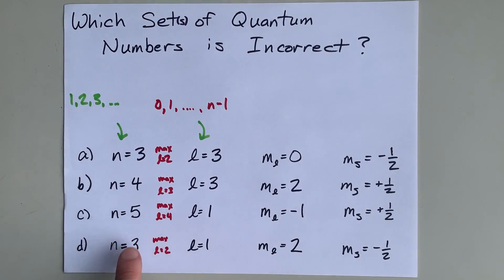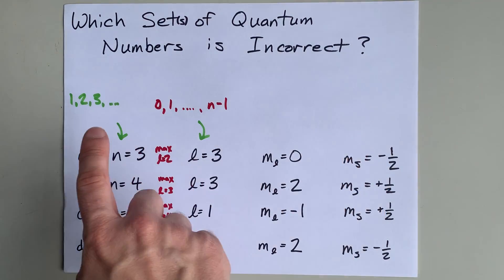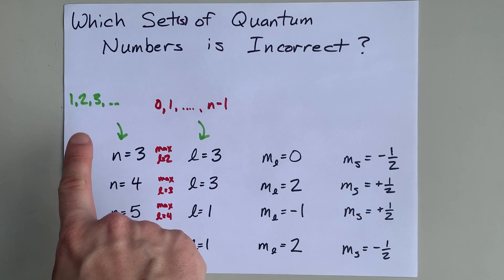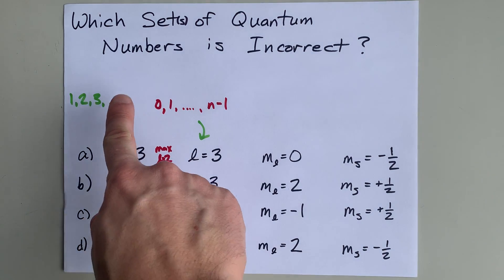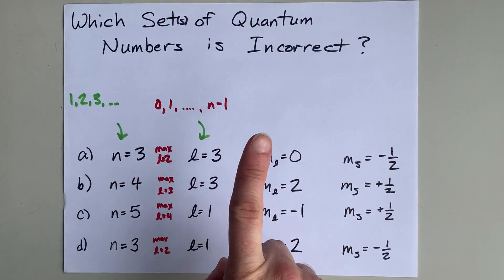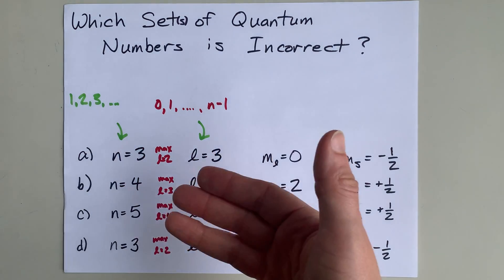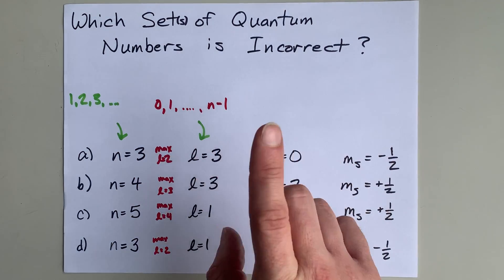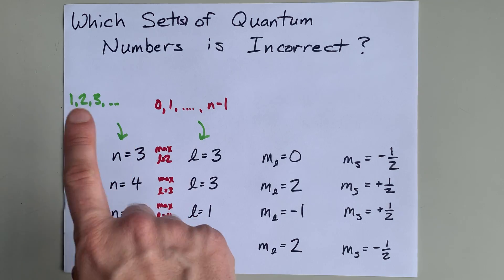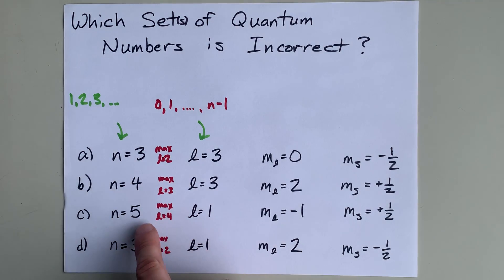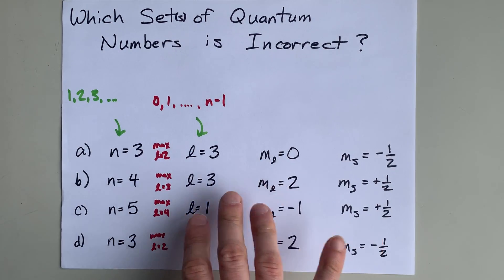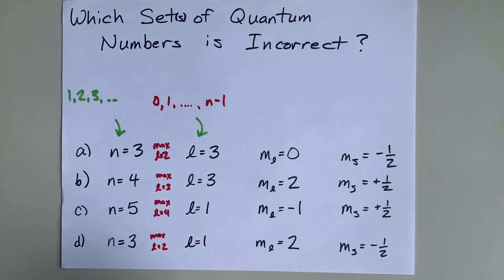We're going to start with N, the principal quantum number. It's allowed to be any whole number starting with 1. So 1, 2, 3, 4, any whole number you want. You generally won't see anything bigger than 7, but any number is allowed as long as it's a whole positive number. 3, 4, and 5 are all valid, so none of these N values here are illegal.